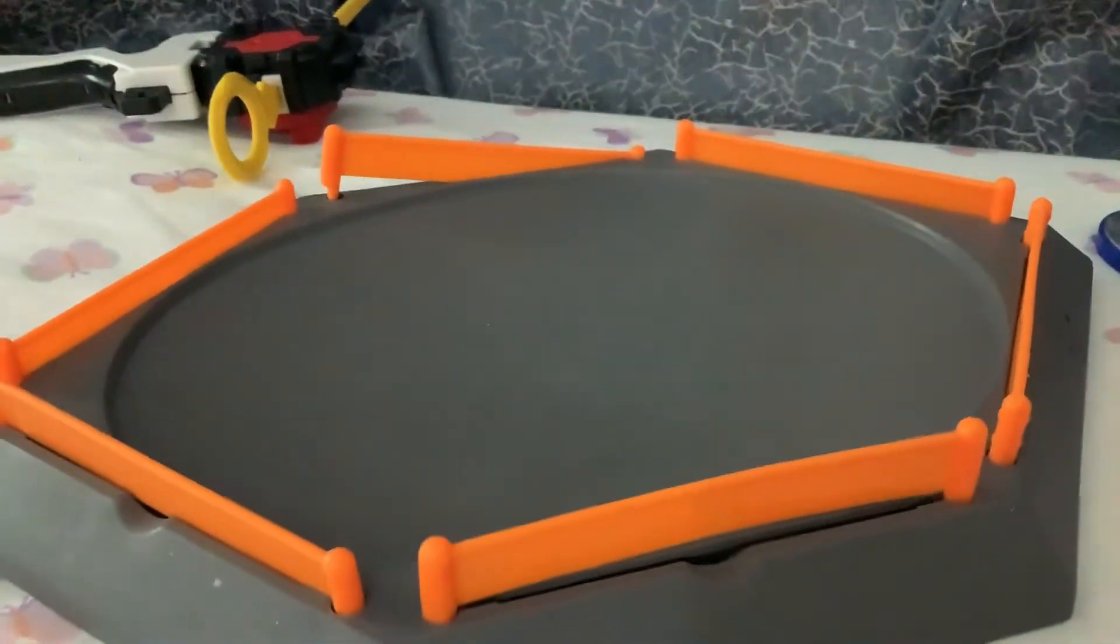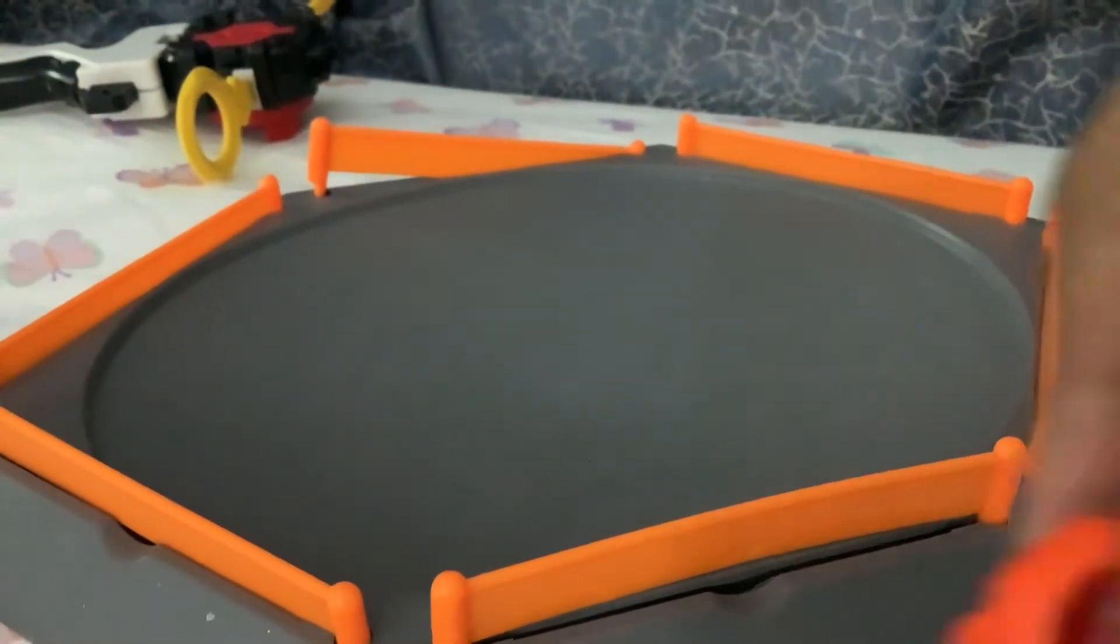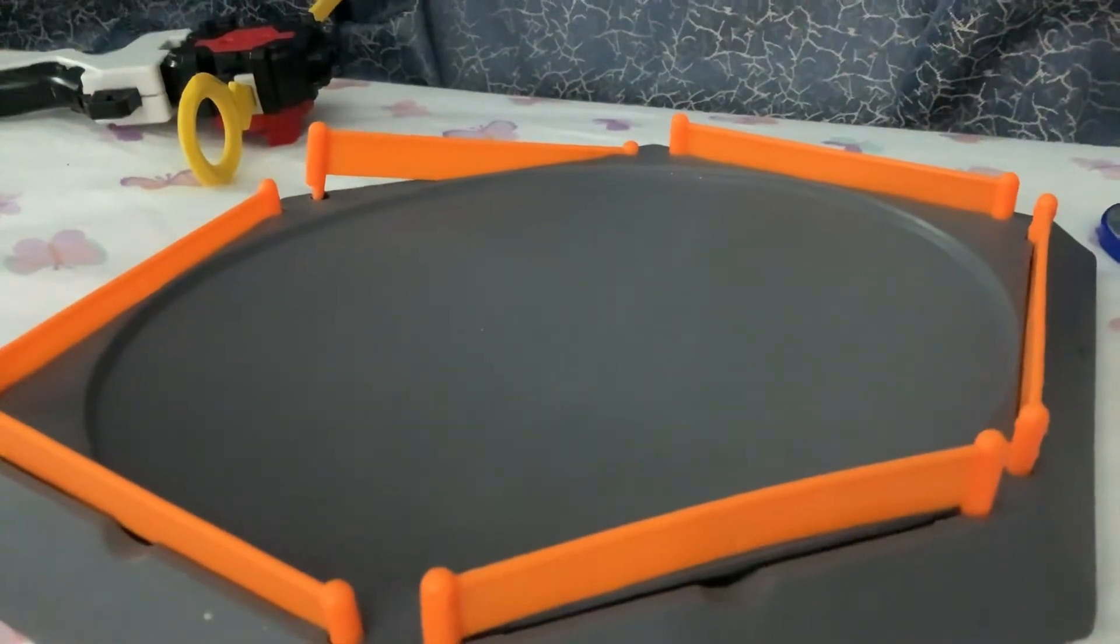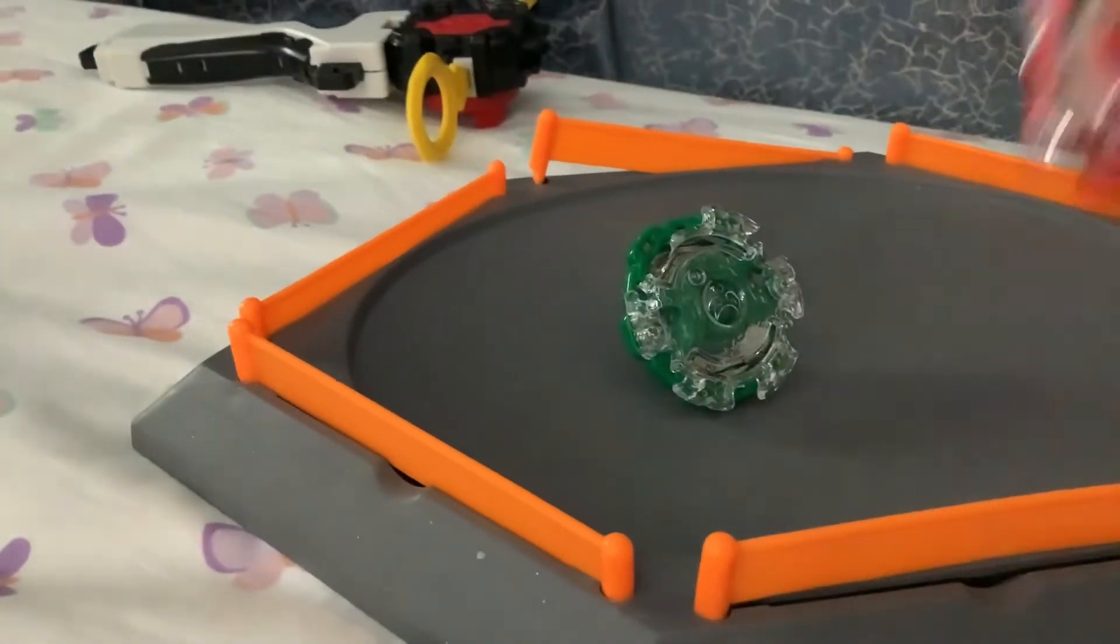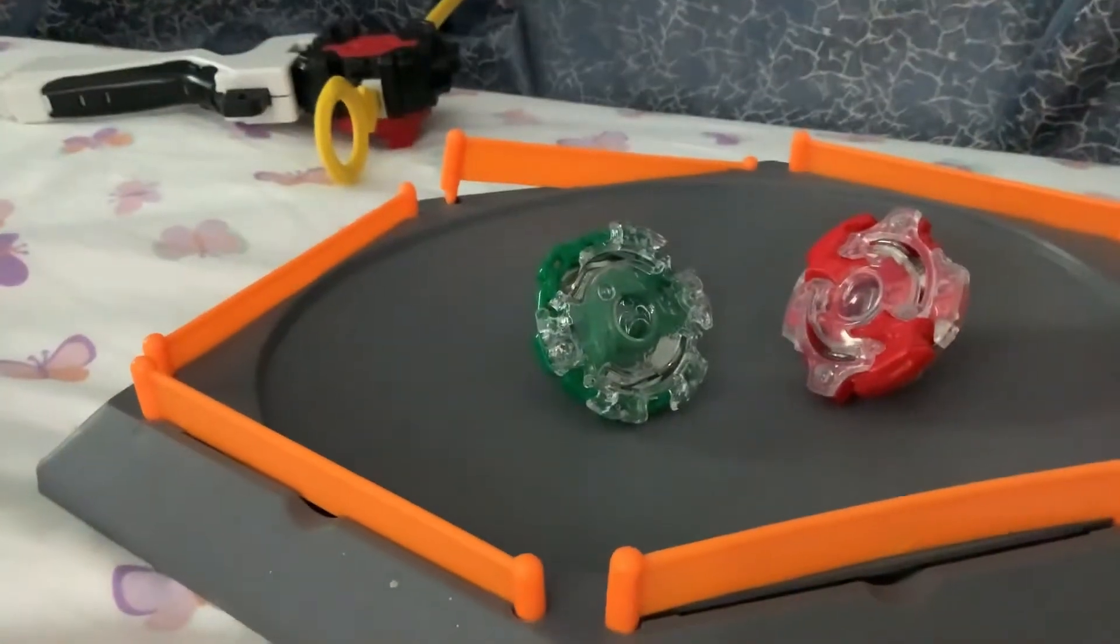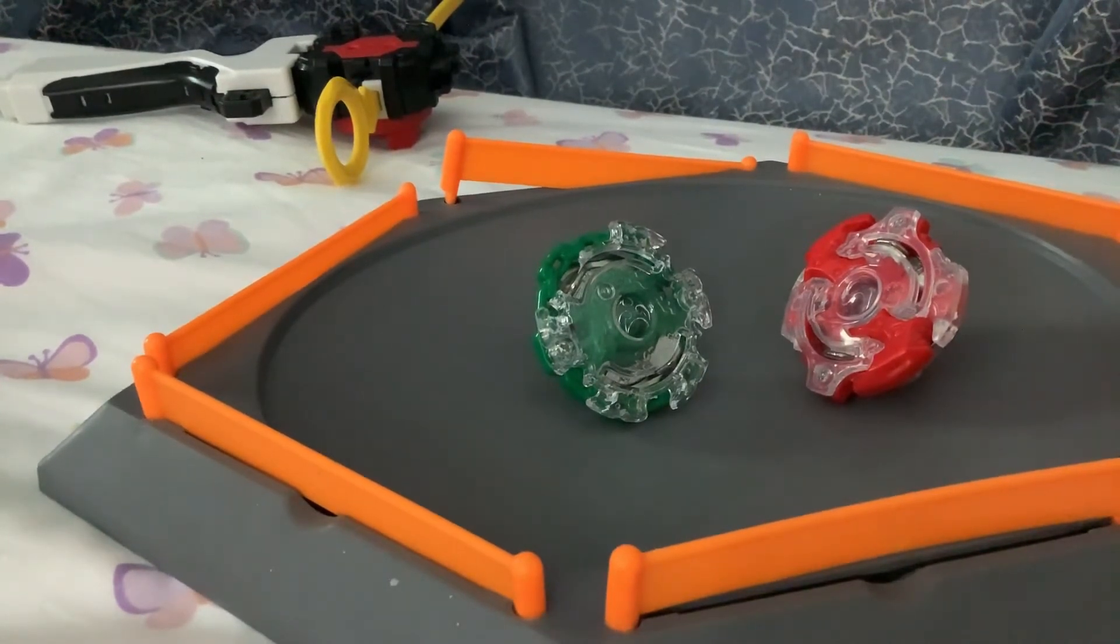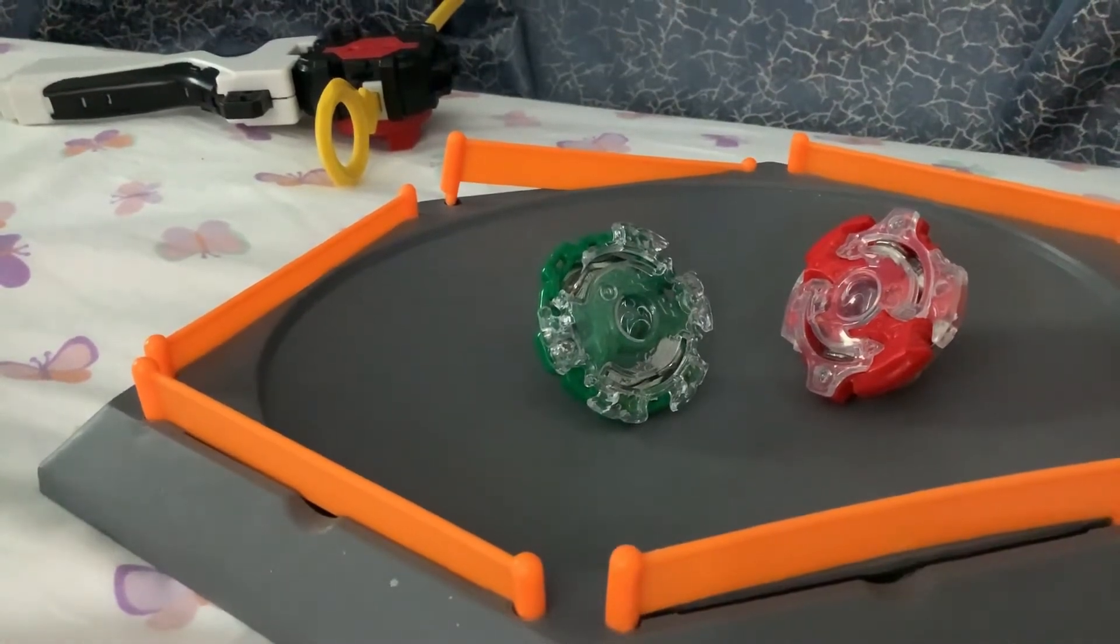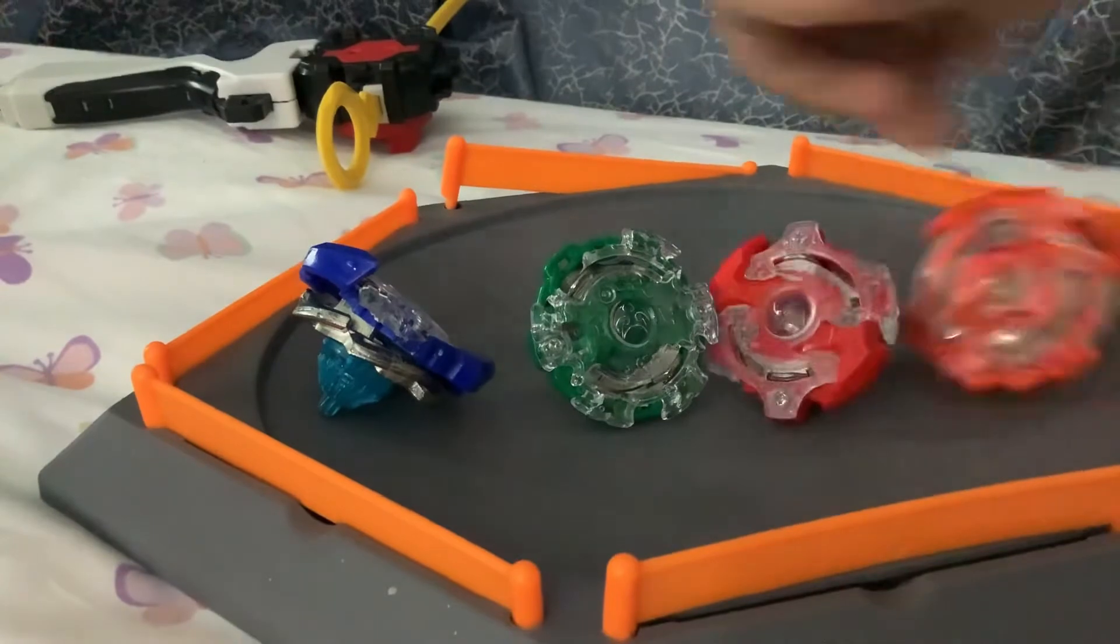You've probably seen Victory Valkyrie and this Ragnarok that I had in my previous videos. I bought another one, so I bought Kerbeus which is broken because I tested it and it pretty much broke. It got broken by Spryzen. And for some reason they gave me a right spin launcher and both of them are left spin. I think, I haven't watched the first season of Burst. I started off with Evolution because it was on Netflix.